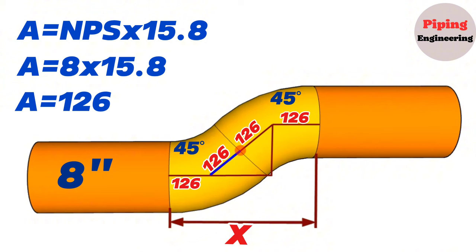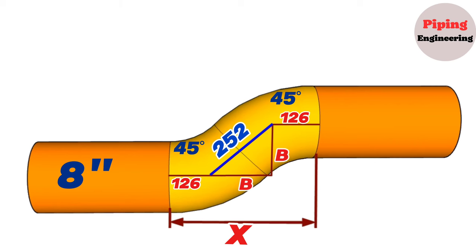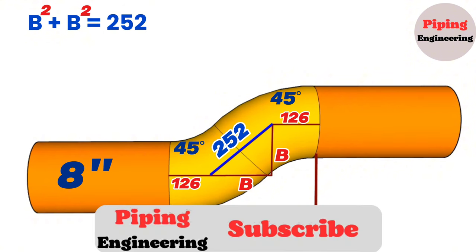The hypotenuse of this triangle is 252. If we mark these perpendicular sides of the triangle with B, then according to Pythagorean theorem formula, B squared plus B squared equals 252 squared.